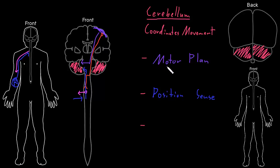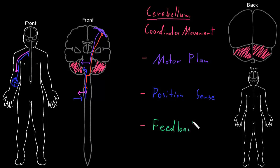Now the cerebellum knows what the motor plan was, and it can compare that to the movement that's actually occurring by looking at this position sense information. It can see if the movement's occurring according to plan, or if corrections are necessary to make it smoother and more accurate. Usually there does need to be some kind of correction. So the cerebellum sends feedback back to the motor areas of the cerebrum — the areas that came up with the motor plan — to try to correct that movement while it's occurring. That feedback travels from the cerebellum through the brain stem into parts of the cerebrum, and then back to the motor areas of the cerebral cortex, changing the activity of upper motor neurons, then lower motor neurons, then the skeletal muscles performing the movement.